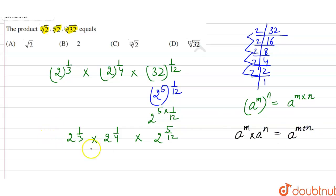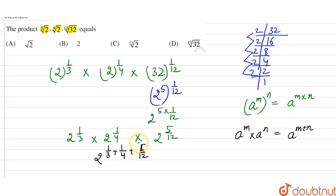The law states: a raised to the power m into a raised to the power n equals a raised to the power m plus n. Here the base is 2, so we can write it as 2 raised to the power 1 by 3 plus 1 by 4 plus 5 by 12.